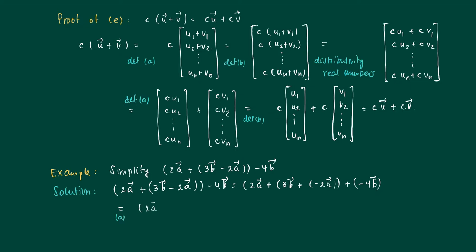By part a, we may turn these terms around. A vector u plus a vector v is the same as a vector v plus a vector u. So we turn them around to get 2a plus minus 2a plus 3b plus minus 4b.